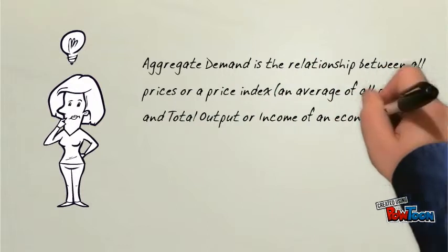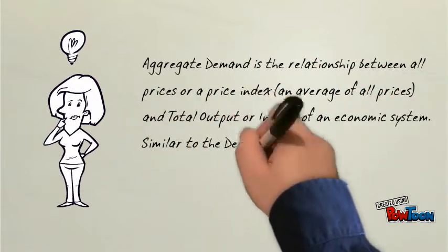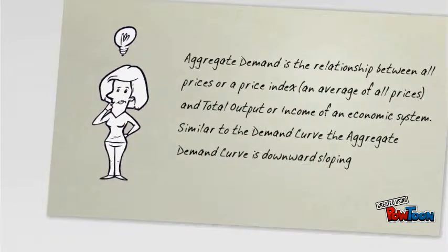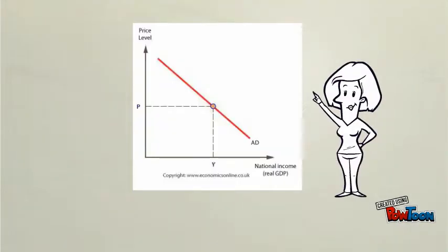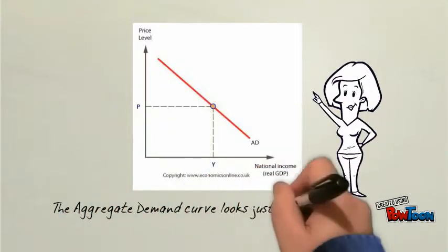Just like a demand curve, the aggregate demand curve is downward sloping. So let's take a look at this aggregate demand curve. Yes, it looks like a demand curve, but now we're looking at the entire society. We're looking at all sectors.